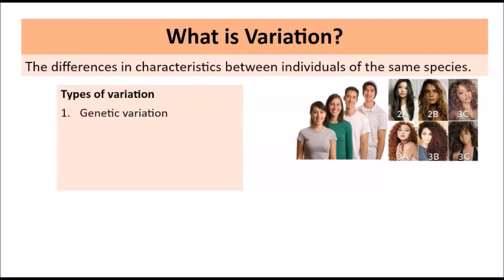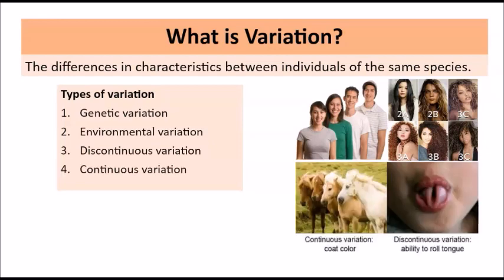In this video I'm going to be looking at four types of variation. The first type is genetic variation, then we're going to look at environmental variation and compare the two, and then we're going to look at discontinuous variation and continuous variation. So we're going to break down the differences between these types of variation among individuals of the same species.